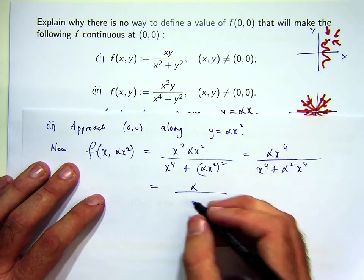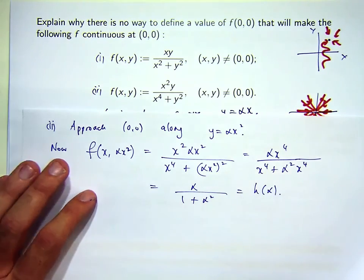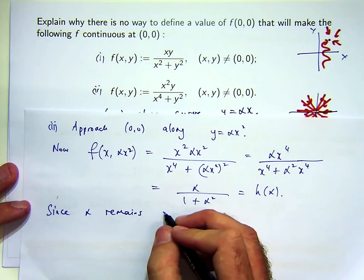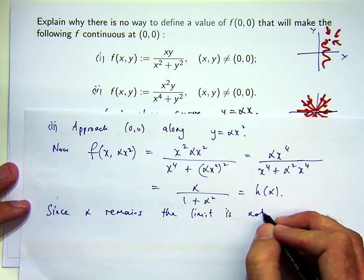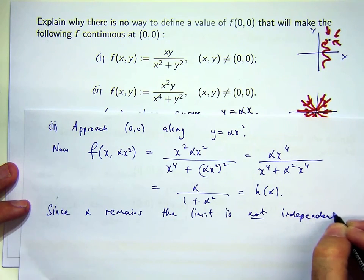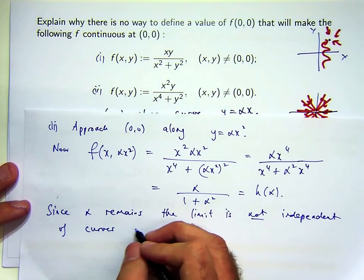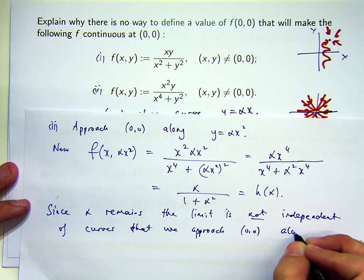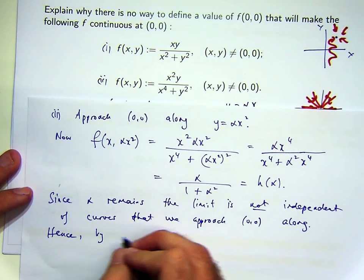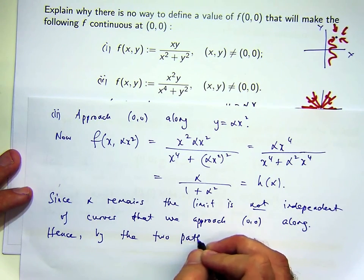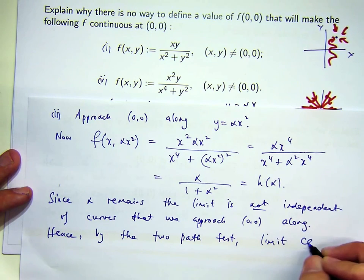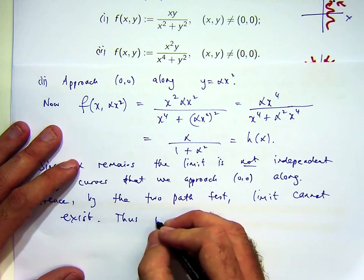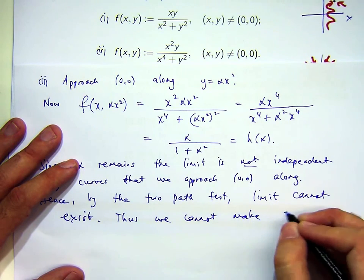As long as x is not 0, we're going to get something that depends on alpha. Since alpha remains — the result is a function of alpha — the limit is not independent of the curves along which we approach. So if we approach the origin along different parabolas, by the two-path test, the limit cannot exist, and therefore we cannot make f continuous at the origin.